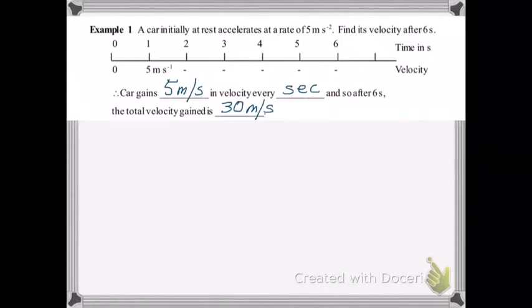We could also apply this formula, noting that U equals 0, and you'd just get V equals 5 times 6 equals 30 m per second.